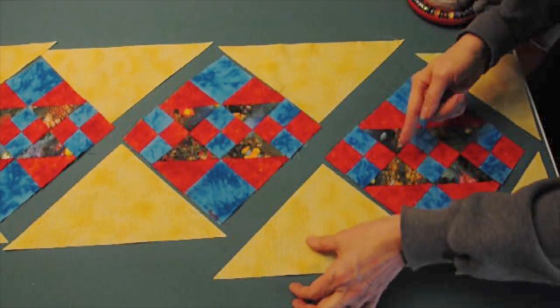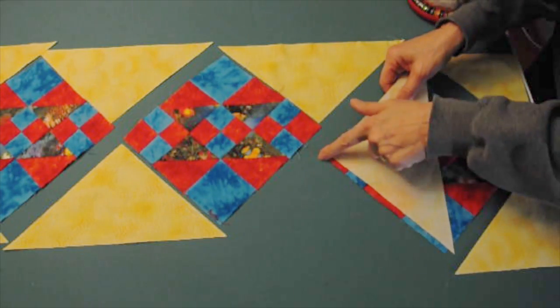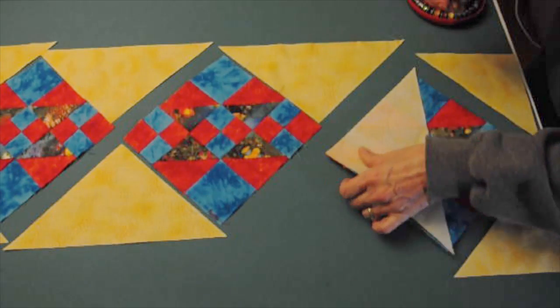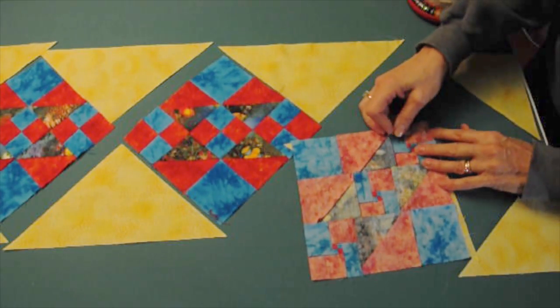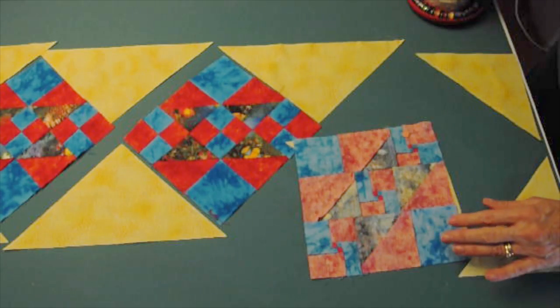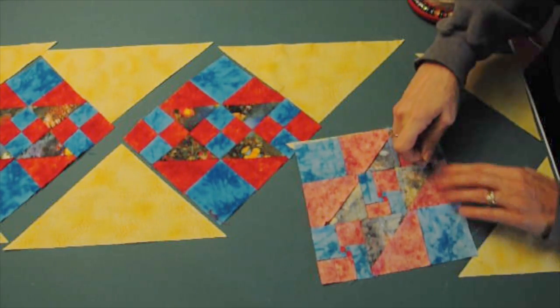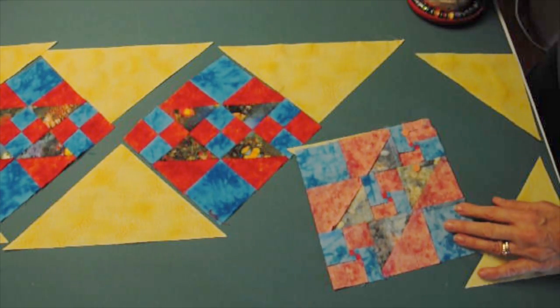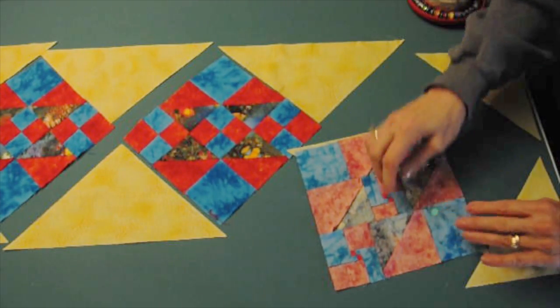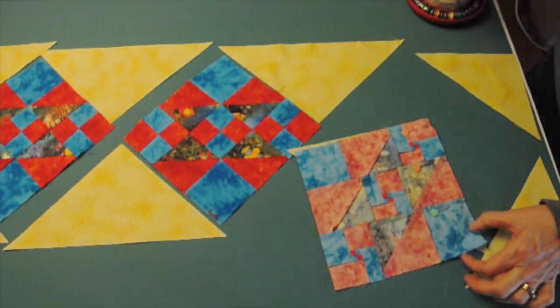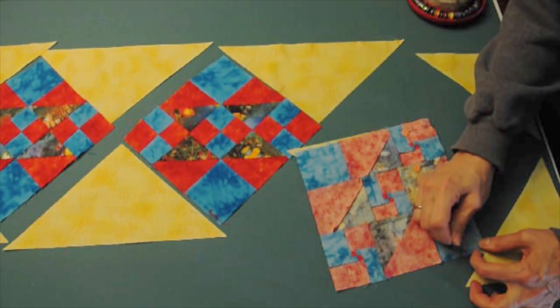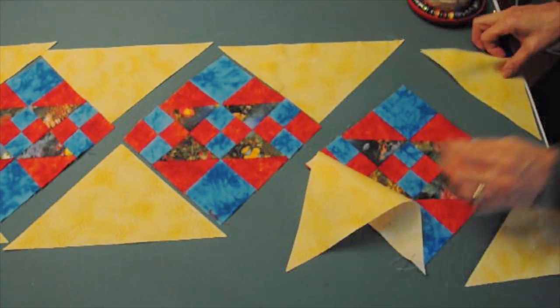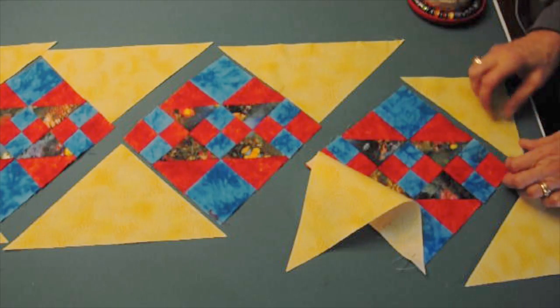First we'll start by sewing the setting triangle to the block. Now you're working with a bias seam, so you want to be really careful with it that you don't stretch it. The first thing you want to do is take those right angled corners and line them up and then pin them together carefully. I like to sew with my block with seams in it, so I like to sew that with that side up so that I can see those seams when I sew it. So the point of the triangle should be extended out past the block.